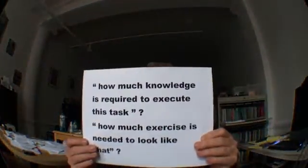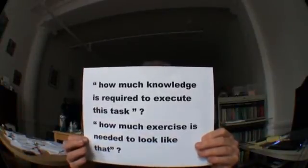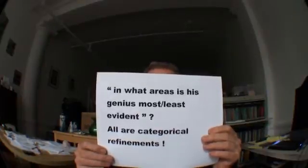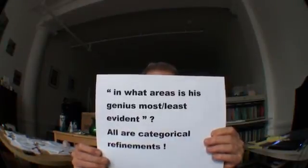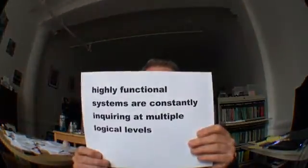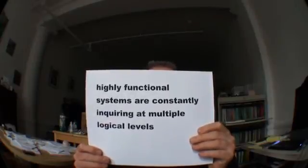If we took the same propositions — what a moron, what a babe, what a genius — and reconsidered them in a chunked-down way, we'd ask: how much knowledge is required to execute that task? How much exercise is needed to look like that? Or in what areas is his genius most or least apparent? We are categorically refining the statement, going to a high level of specific data about what that type of person exactly has, what it shows, and what it manifests to the world.